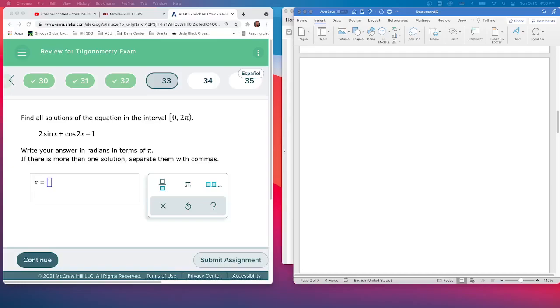Question 33 asks for the solution to this equation on the interval from 0 to 2π, one time around the circle. This time we have a double angle formula, so to be able to solve this we're going to want to look at it carefully.